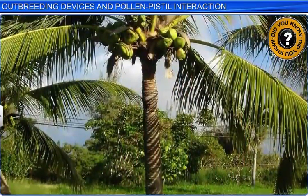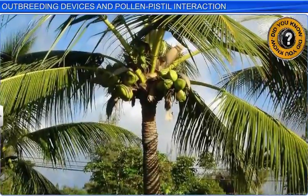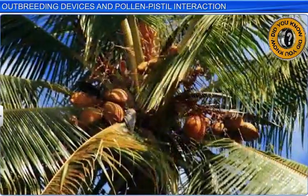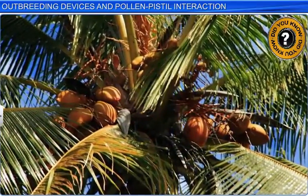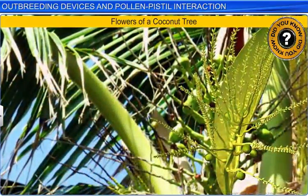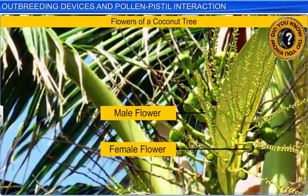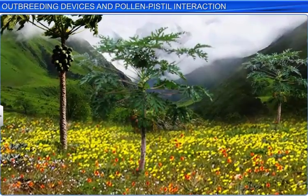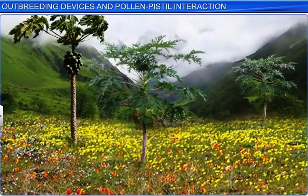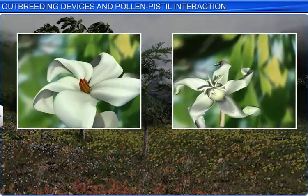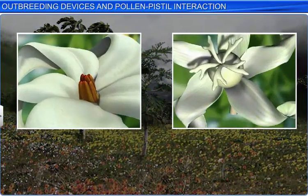The production of unisexual flowers is also a mechanism developed to thwart self-pollination. In the case of monoecious plants such as coconut, unisexual flowers prevent autogamy but not geitonogamy. However, in the case of dioecious plants such as papaya, unisexual flowers prevent both autogamy and geitonogamy.